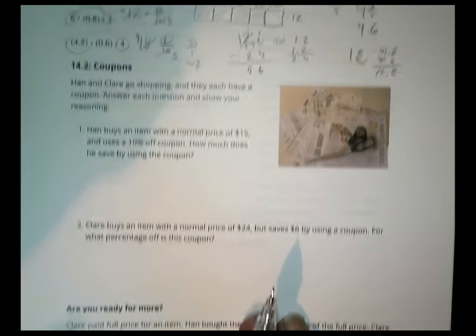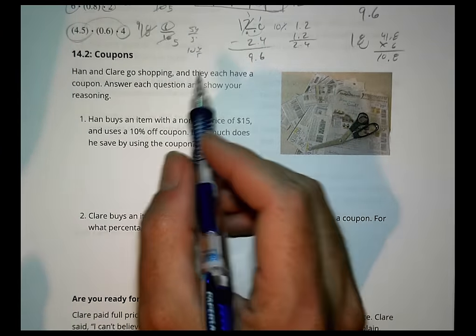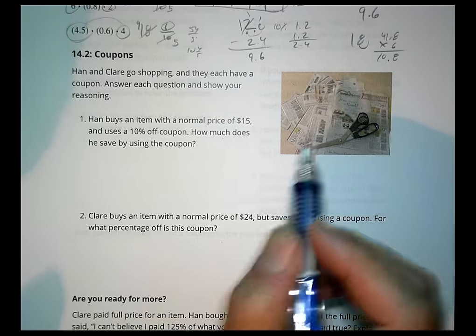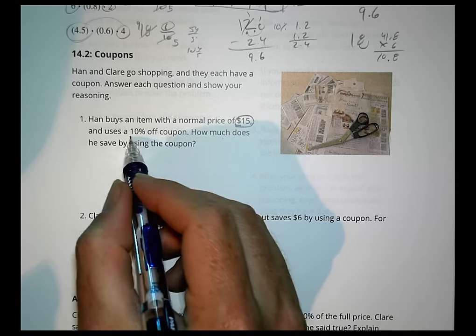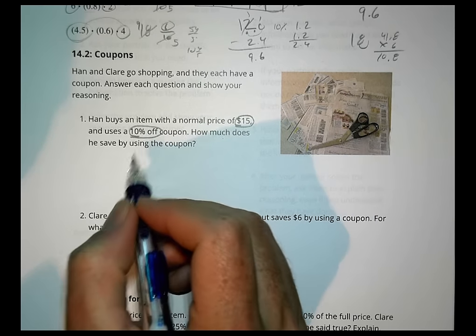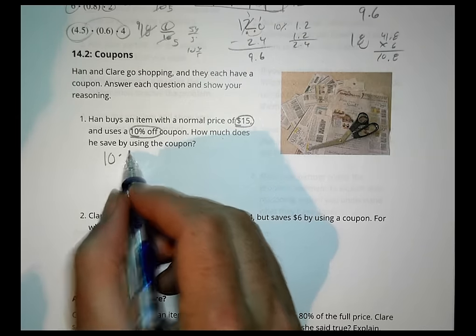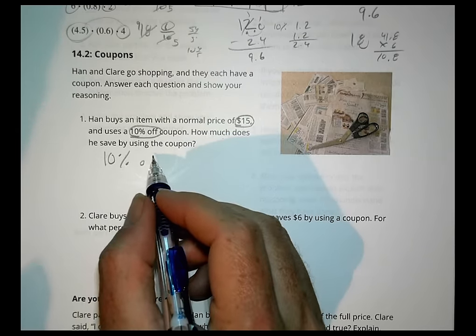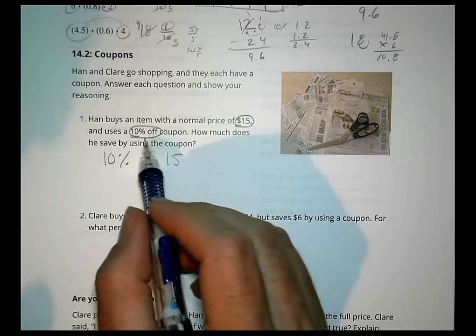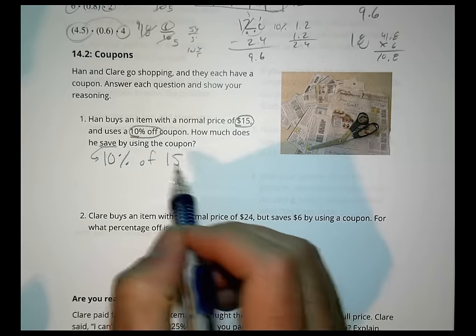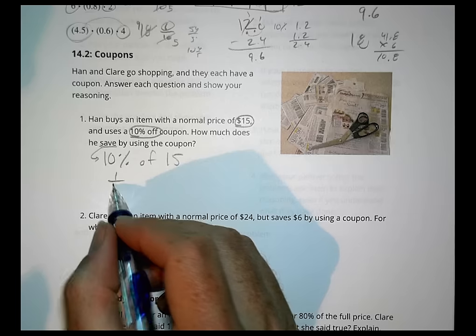Let's look at the next one. Today's lesson is looking at a coupon. It says Han and Claire go shopping and they each have a coupon. Answer each question and show your reasoning. Han buys an item with a normal price of $15 and uses a 10% off coupon. How much does he save using the coupon?